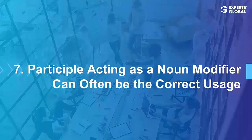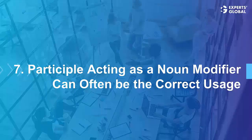Trap number 7. From number 5 and number 6, you may have thought that a present participle or past participle acting as a noun modifier is a problem. No, that's not the case. Remember, it's all about the meaning. A participle acting as a modifier can very often be the correct usage when the meaning is such.